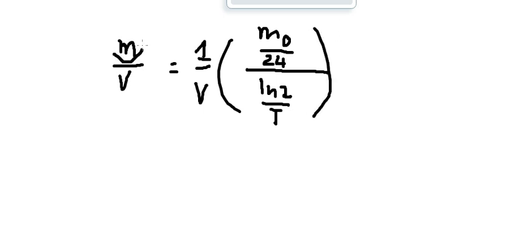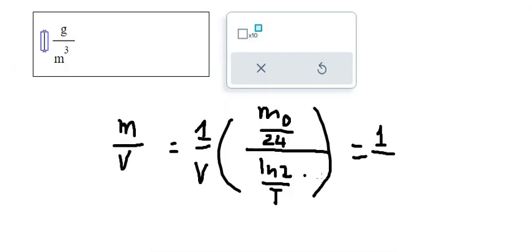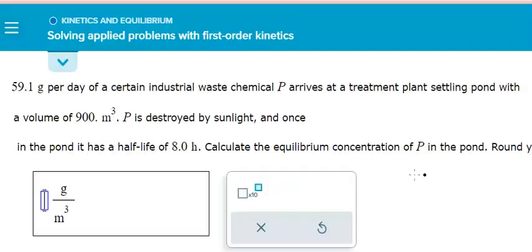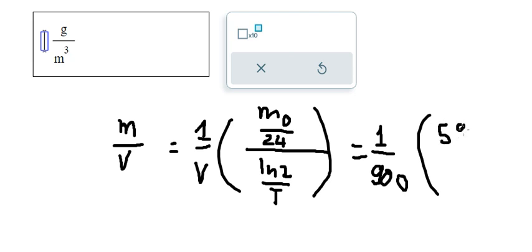And that is the m we need to find here. So the volume we have is 900. We have 59.1, we put this one here, and the half-life we have is 8.